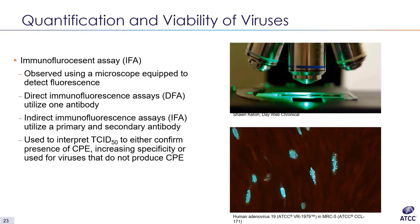The immunofluorescence assay (IFA) is a method of detecting and visualizing a specific antigen in a sample using an antibody or antiserum conjugated with a fluorescent dye, observed by a microscope equipped to detect fluorescence. This assay can be used to interpret results of a TCID50 by detecting immunofluorescence instead of CPE, allowing you to clearly visualize cells infected with virus. It has higher specificity over a standard TCID50 because it uses specific viral antibodies.